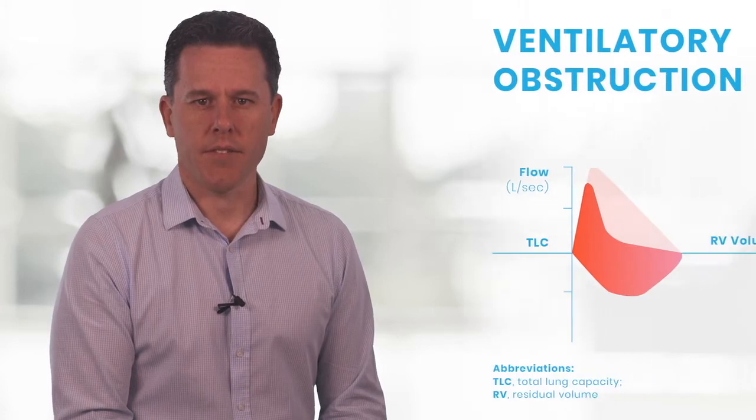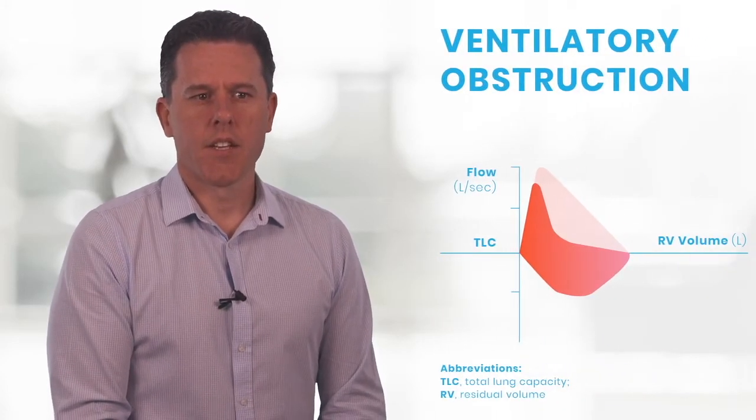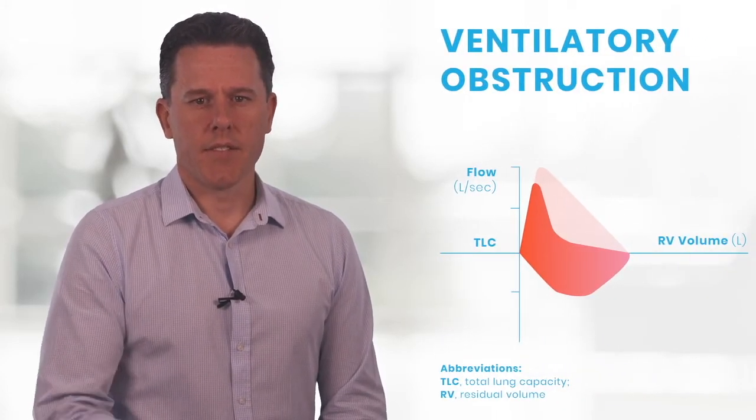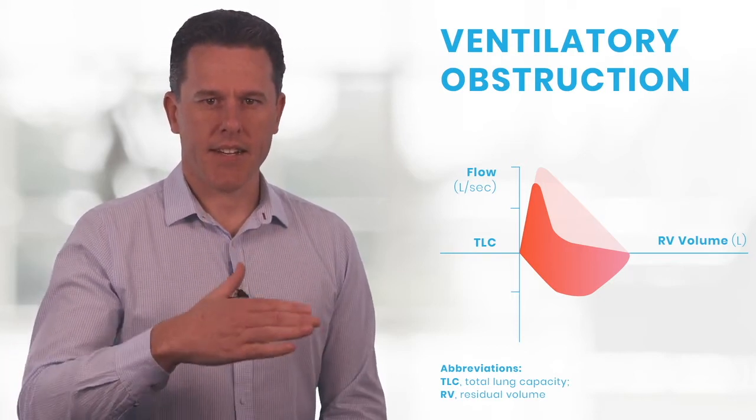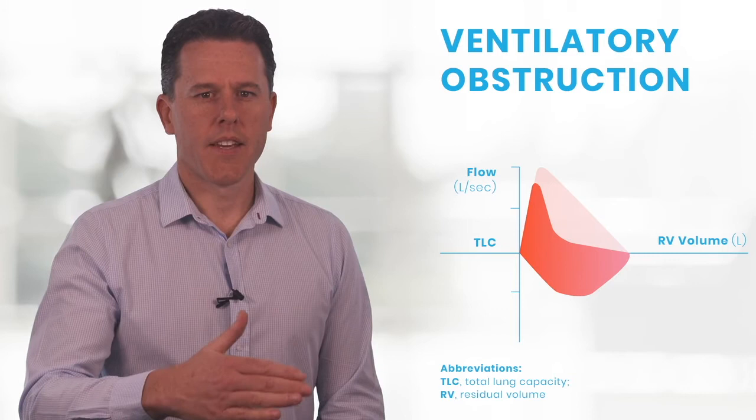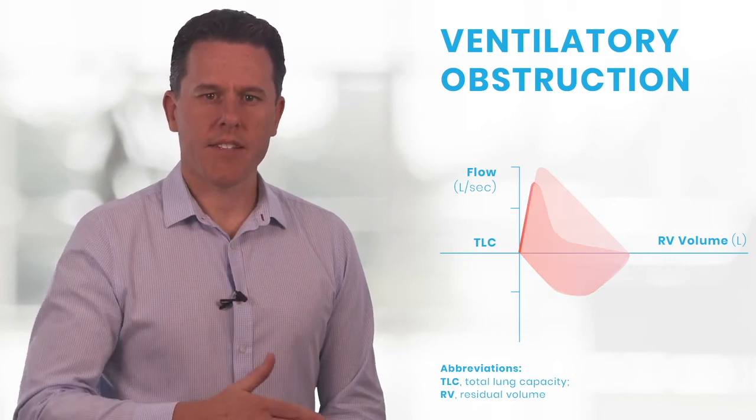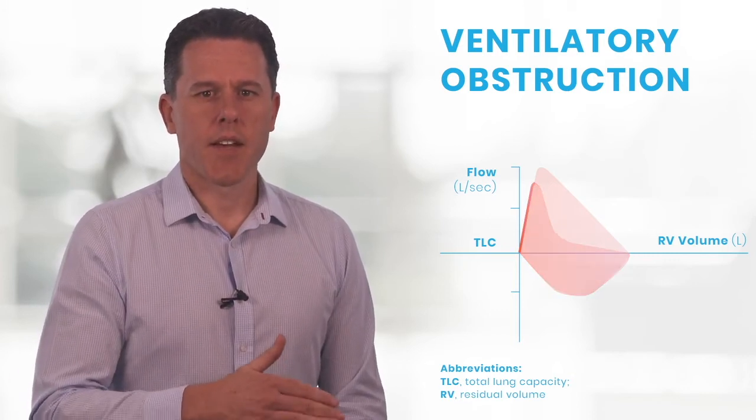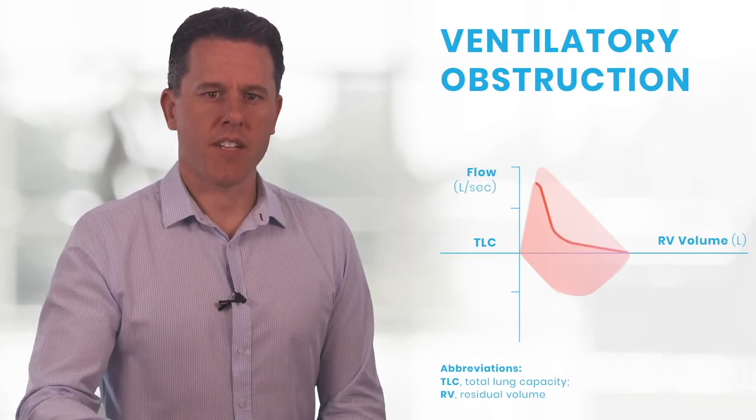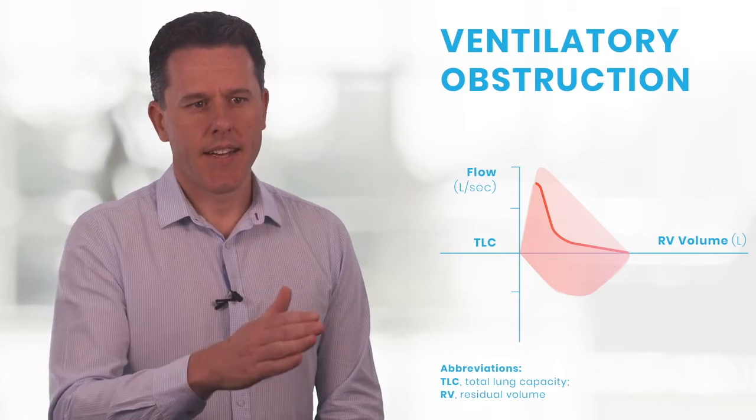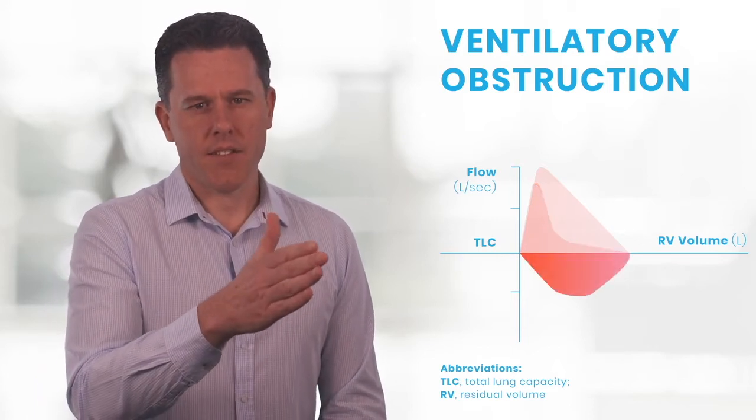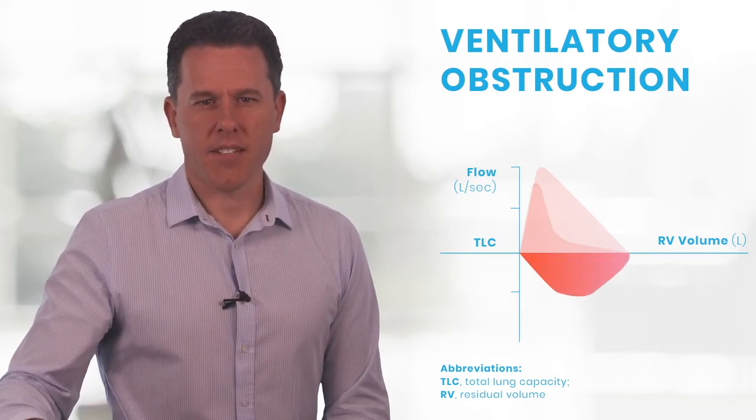If we go on to the next flow-volume loop, we can see an example of what happens when there's airflow obstruction. The patient is at total lung capacity and expires as hard and as fast as possible. There is a rapid rise in flow rate, however then it really tails off much faster, so flow rate drops quicker than expected. The result of that is it gives you that scalloped out effect of the curve.